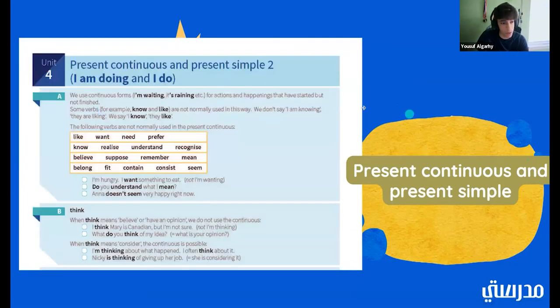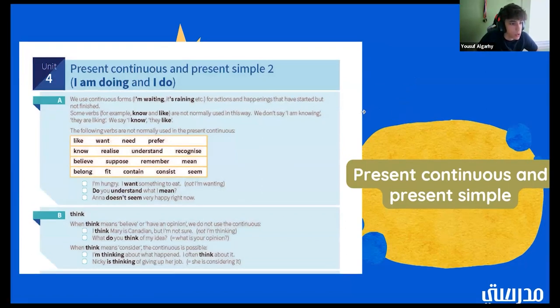Now, we have the second half of the present continuous and present simple. So, we use continuous forms like I'm waiting, it's raining, et cetera, for actions and happenings that have started, but not finished. Some verbs, for example, know and like, are not normally used this way or used in this way. We don't say I am knowing or something like they are liking. We say I know and they like. The following verbs are not normally used in the present continuous.